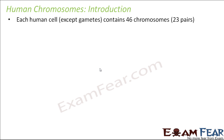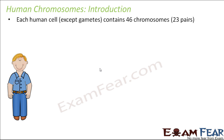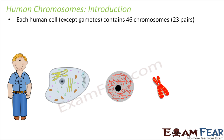We have also studied about the structure of each cell. Inside each cell we have a nucleus. If you magnify this nucleus, inside the nucleus we have thread-like structures which are called chromatin. These chromatin condense to form rod-like structures called chromosomes. And why are chromosomes important? Because they play a very important role during the process of cell division — that is when cells form new cells.